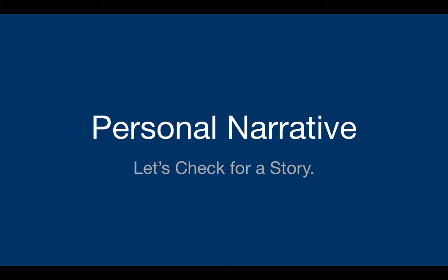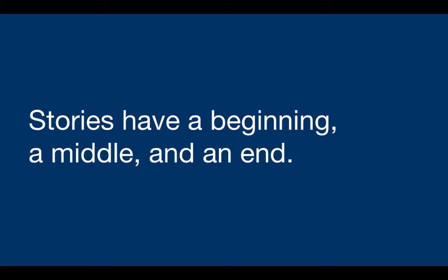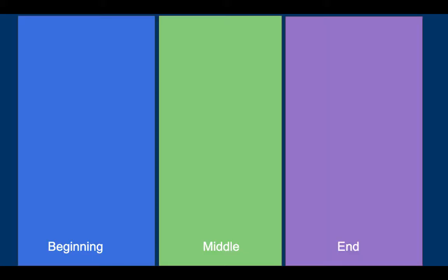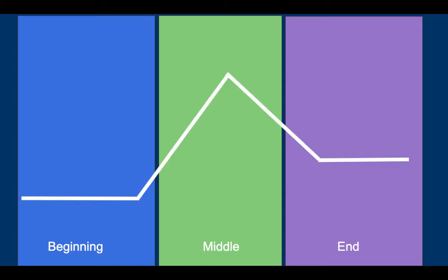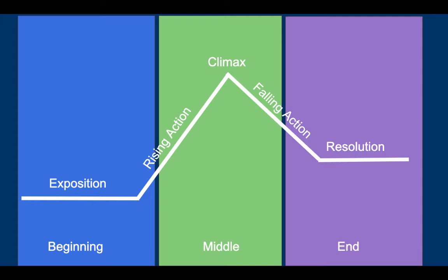So let's review. What does it mean to write a story? Stories have a beginning, a middle, and an end. And I bet you've probably seen this image before — it's called Freitag's Pyramid, and we usually use it to help us as readers understand the parts of a story. We talk about the exposition, the rising action, the climax, the falling action, and the resolution.